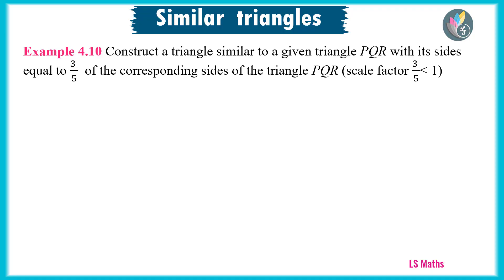Now, let us read the question. Construct a triangle similar to a given triangle PQR with its sides equal to 3 by 5 of the corresponding sides of the triangle PQR. Scale factor 3 by 5 is less than 1. To visualize the triangle, we should write the scale factor first and we should put an arrow mark from the denominator to numerator like this.